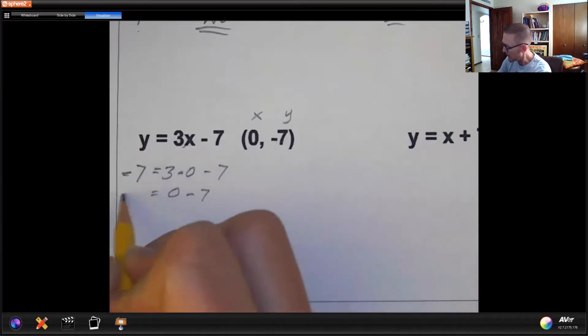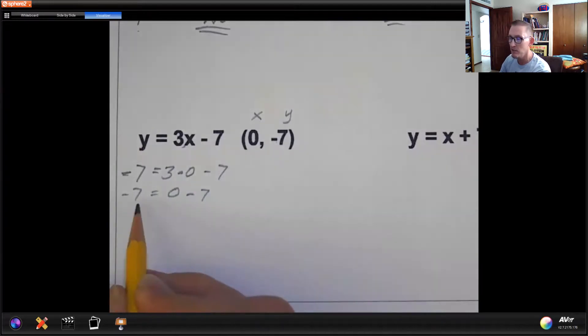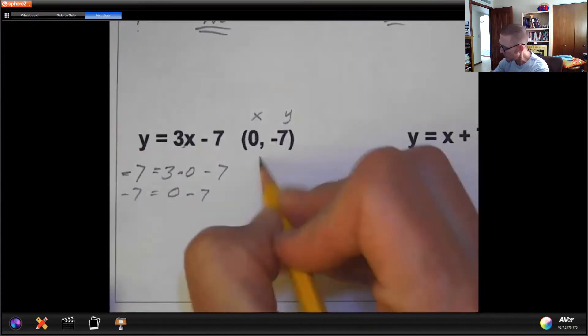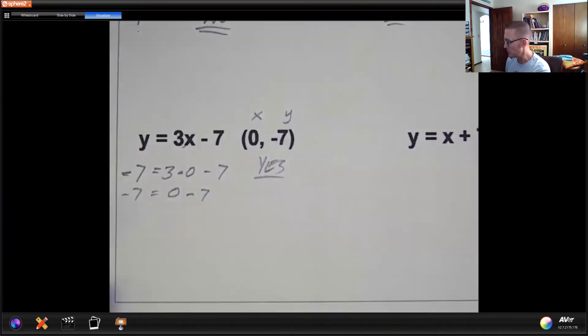And then bring down the minus 7 here. Does negative 7 equal 0 minus 7? And negative 7 is equal to 0 minus 7. So yes, that is a solution.